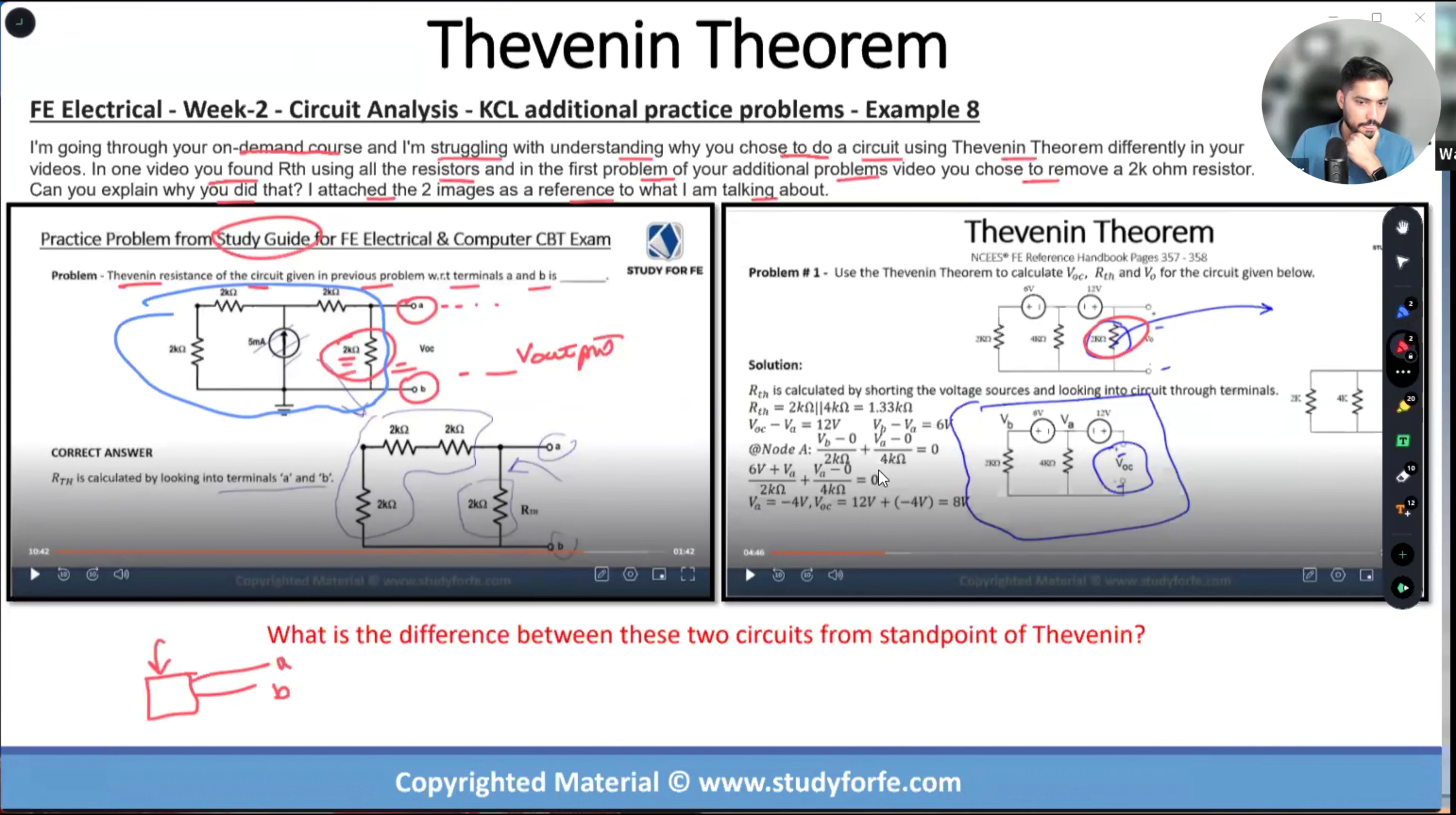Now when I focus on the second circuit, what I see over here is: use the Thevenin theorem to calculate voc open circuit voltage, R Thevenin, v naught for the given circuit below. I am calling this as the output voltage. Output voltage is going to appear across what type of resistor? Output resistor, load resistor, stuff that is going to be connected ultimately in series with this. So this is the R out.